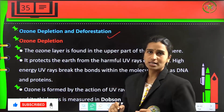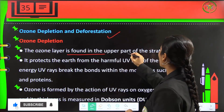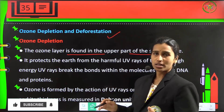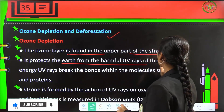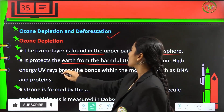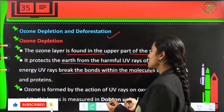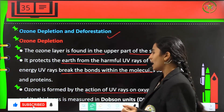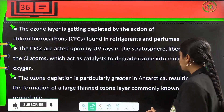Next is ozone depletion. The ozone layer is found in the upper part of the stratosphere and is the main layer which protects the earth from harmful UV rays from the sun. High energy UV rays break the bonds within molecules like DNA and proteins. Ozone is formed by the action of UV rays on oxygen molecules, and its thickness is measured in Dobson units.